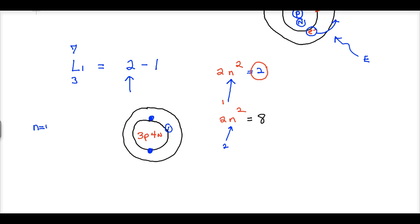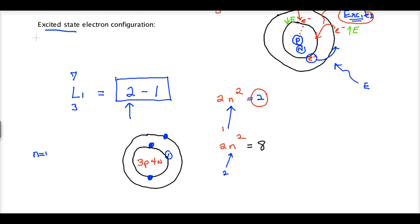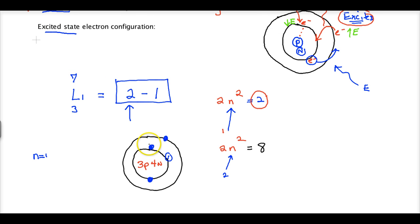This would be called a ground state electron configuration because this configuration is going in order of low energy first. Electrons fill the lower energy positions first, and then they fill the higher energy positions. Electrons fill from in to out. 2-1 is electron configuration.